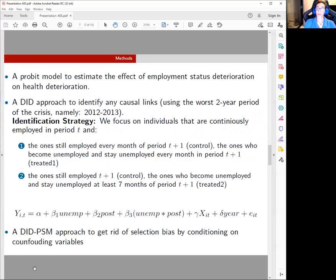We start by performing a probit model to estimate the effect of employment status deterioration on health deterioration, and then we go on with a difference-in-differences approach to identify any causal links, and here we use only the worst two-year period of the crisis, which is 2012 and 2013. We provide two specifications for this approach that differentiate in terms of the group of the treated individuals.